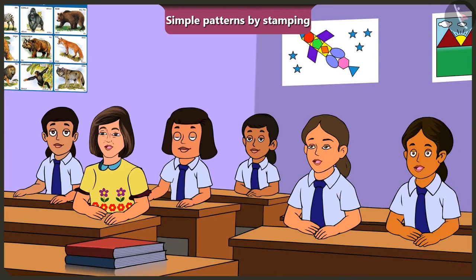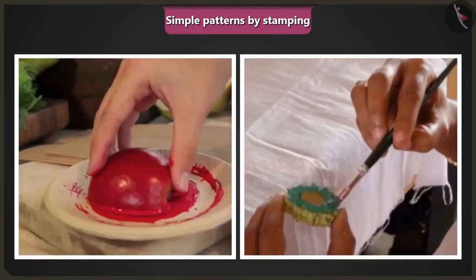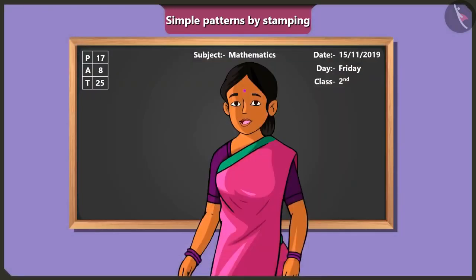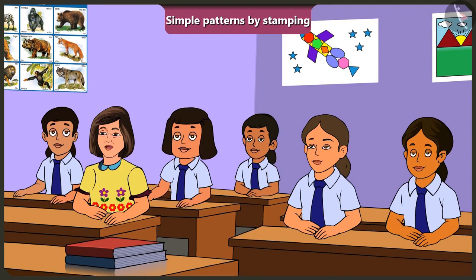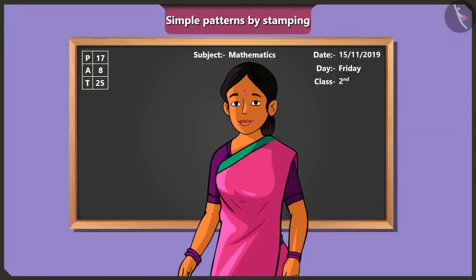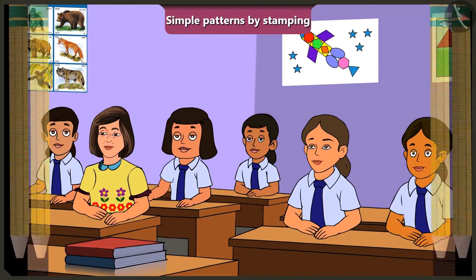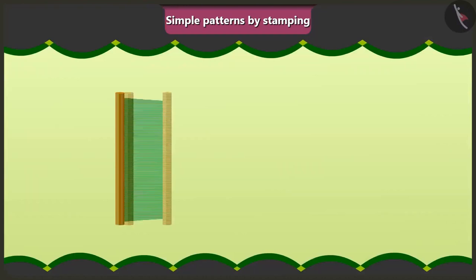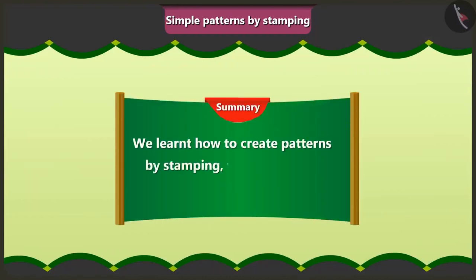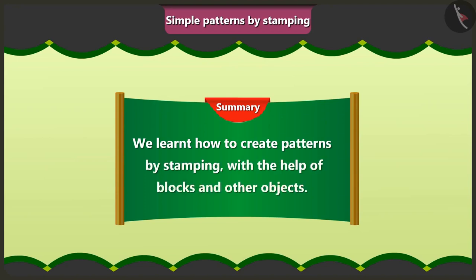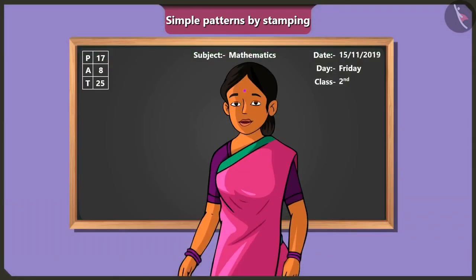You can make patterns using any block or object as a stamp — all you need to do is apply color on them or dip them in color. Homework: stamp a beautiful pattern in your notebook with a block or object of your choice and bring it tomorrow. Today we learned how to stamp patterns with the help of blocks and other objects.